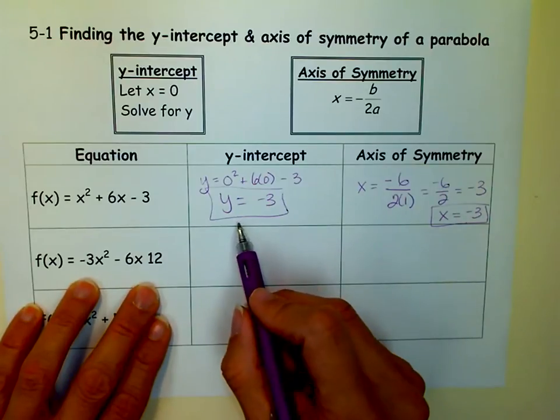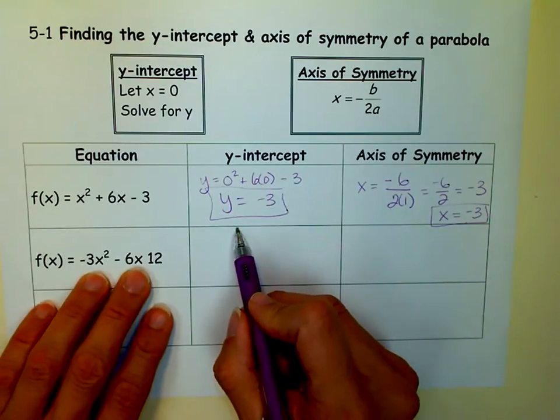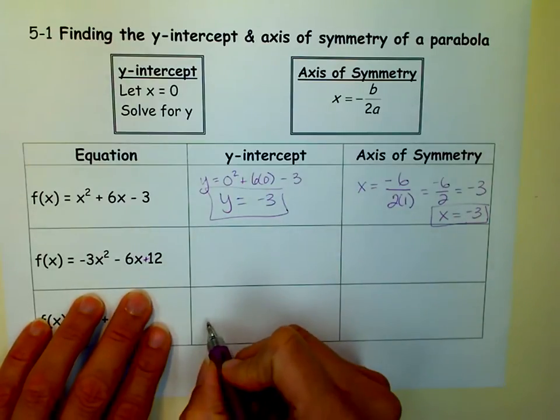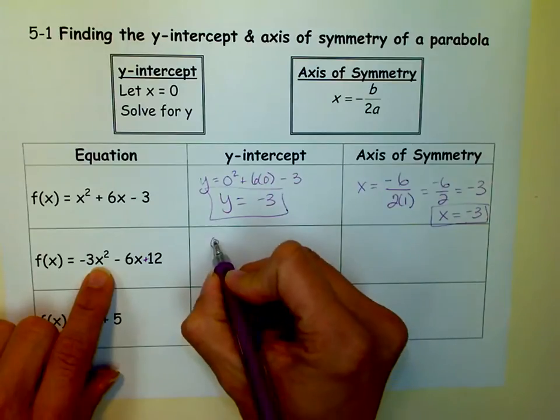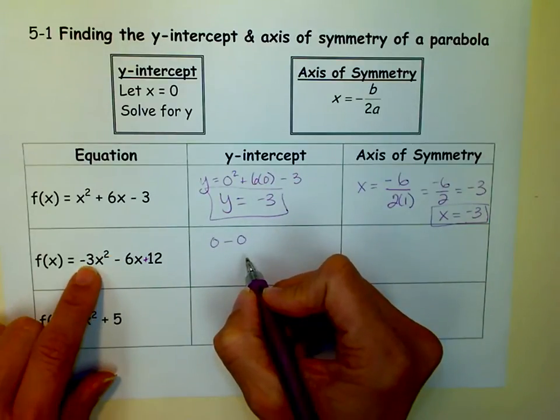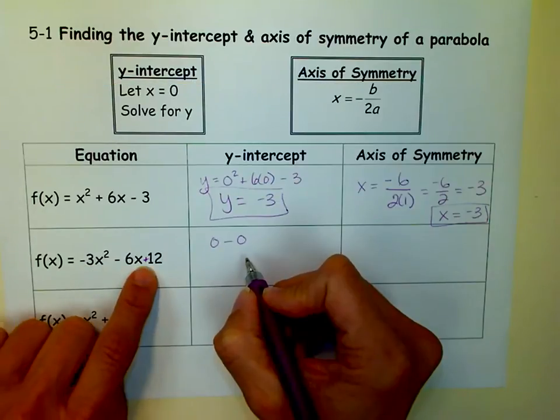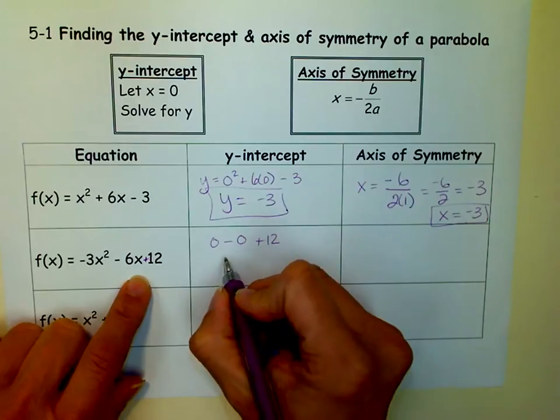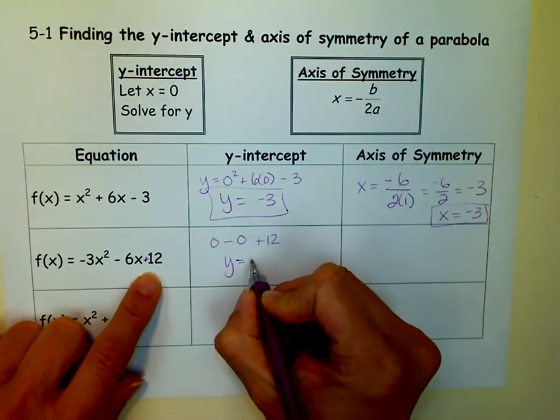We're going to set each x equal to 0, and if I do that, and look at that, I forgot to put a little plus sign there. Sorry about that. And if I do that, I get 0 minus 0, because 0-squared is 0, times negative 3 is 0, and 6 times 0 is 0. So I have 0 minus 0 plus 12, so my y-intercept is 12.